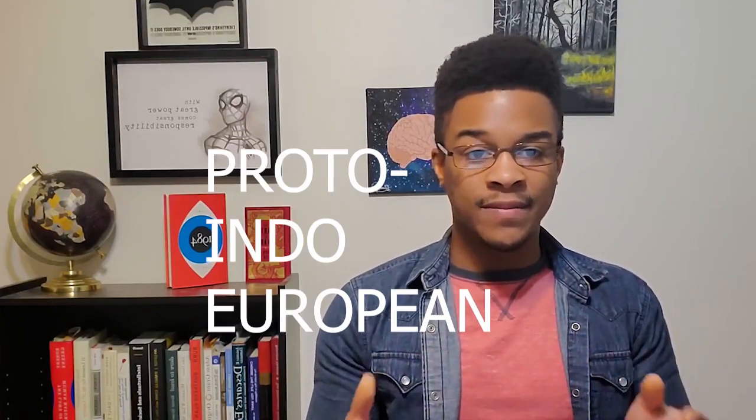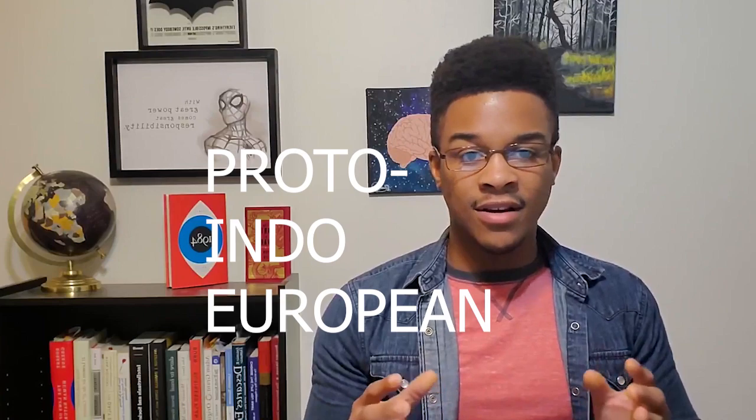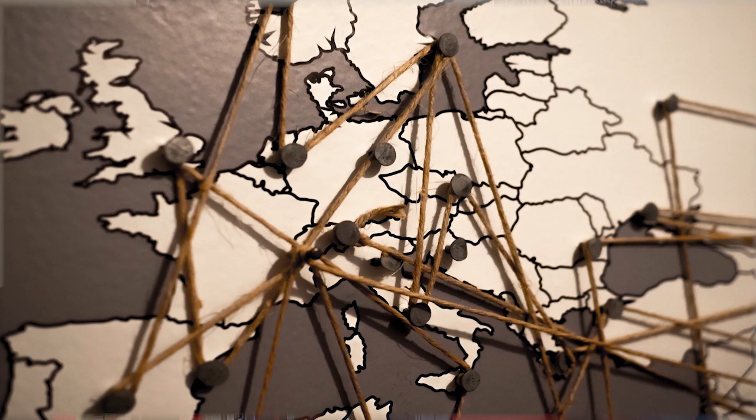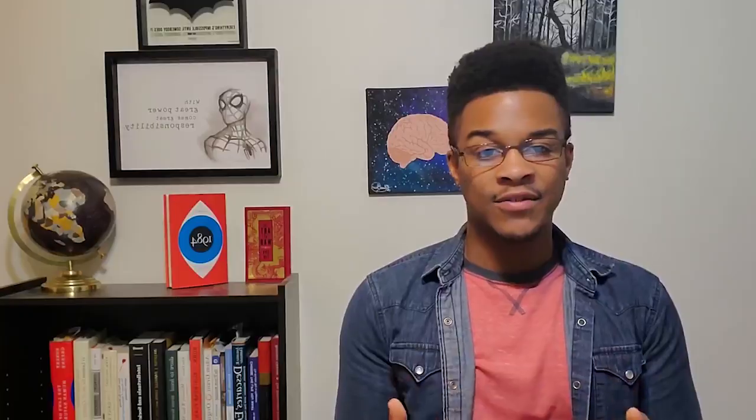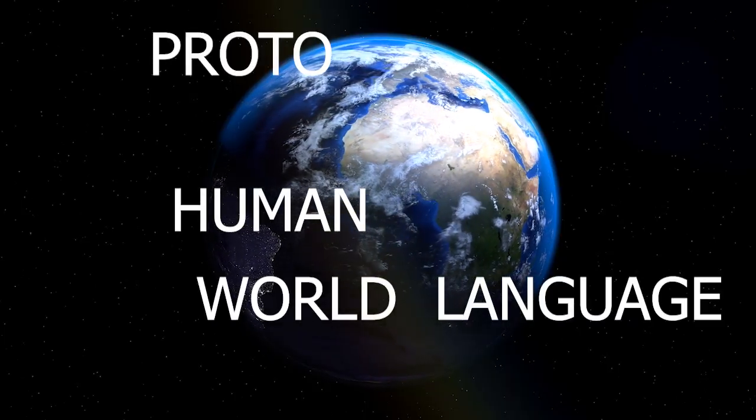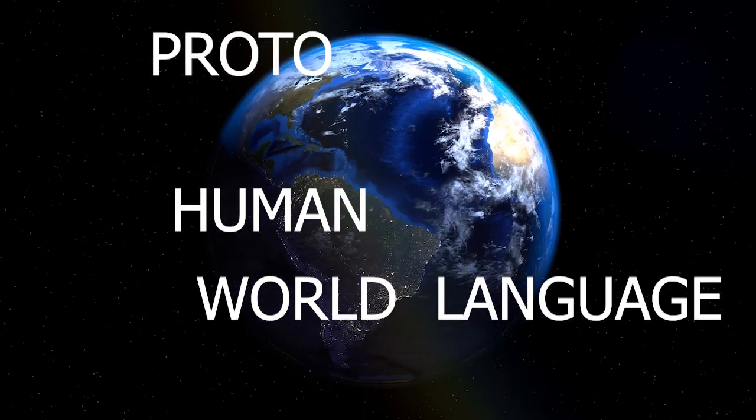It's called Proto-Indo-European and it's the language that's thought to have been spoken by everyone from the western coast of Europe to the southwestern coast of Asia. It's theorized that Proto-Indo-European and every language that's spoken on earth today would have had a common ancestor. Although it's too far back for us to gather information on, this Proto-Human world language is a lost language.